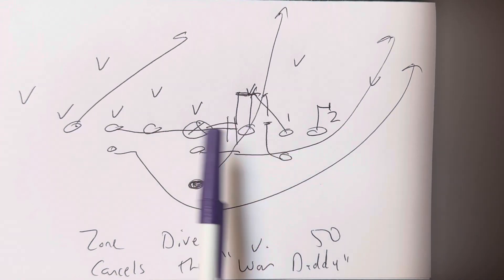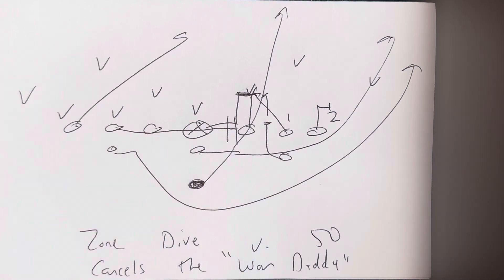There'd be issues at times, because the inside veer, they'd try to bend behind the action key, which is the zero, and then the backside backer would get involved. But, see, zone dive eliminates all that.